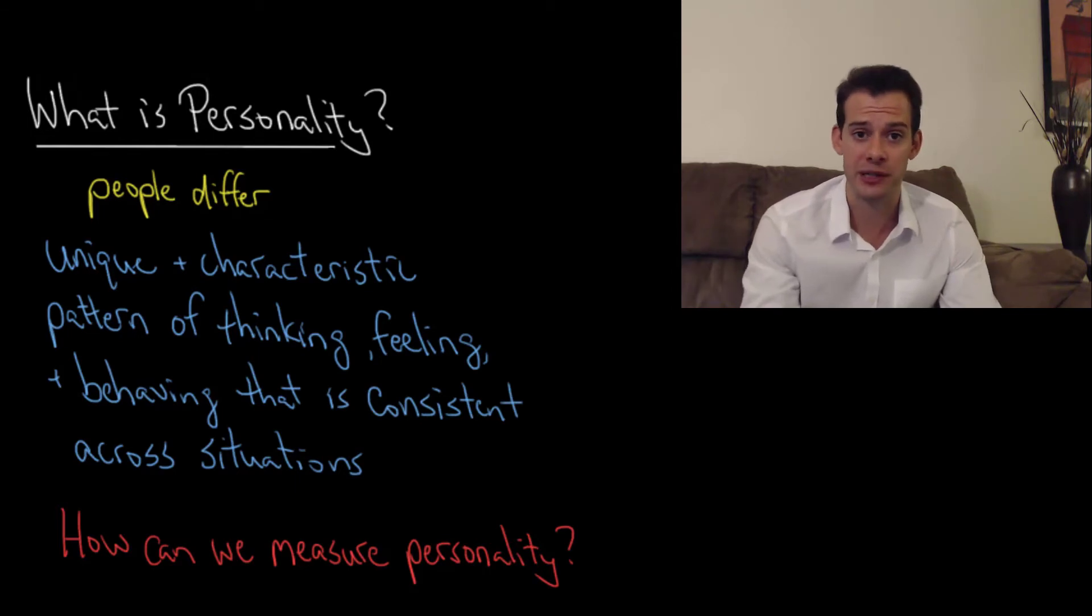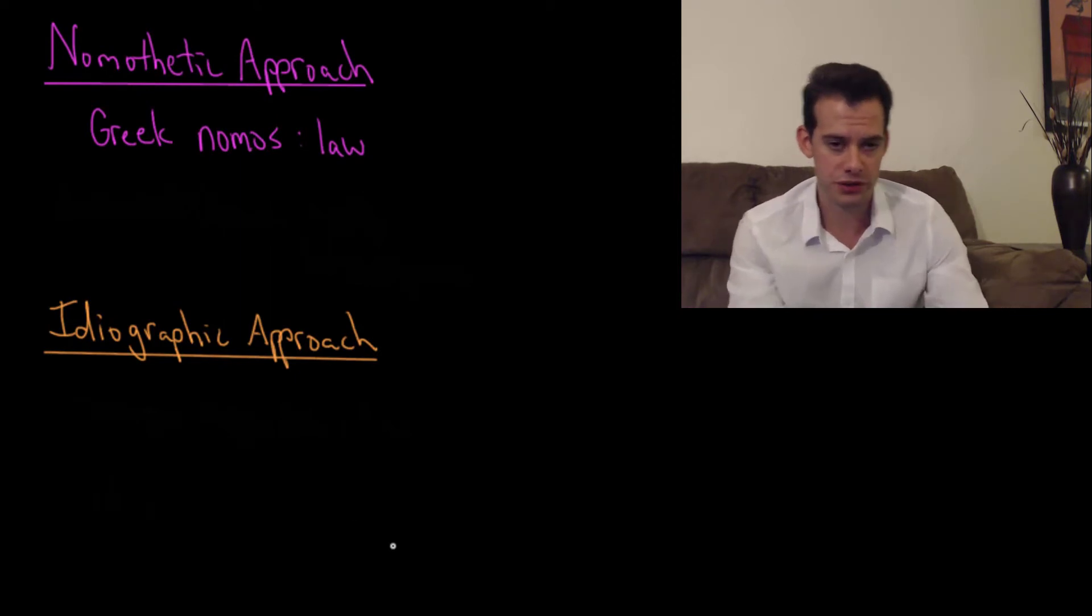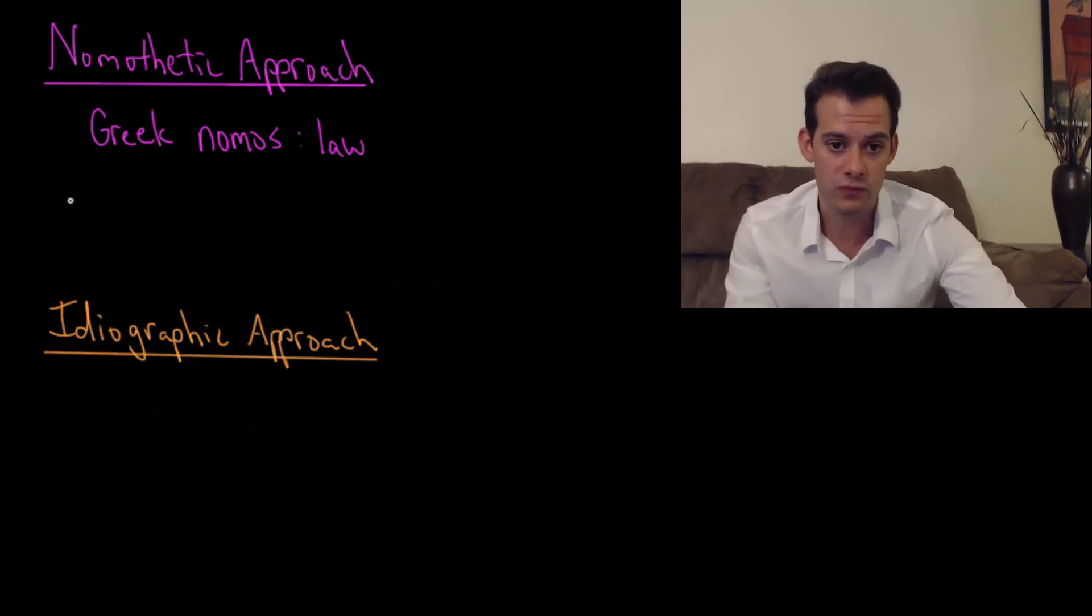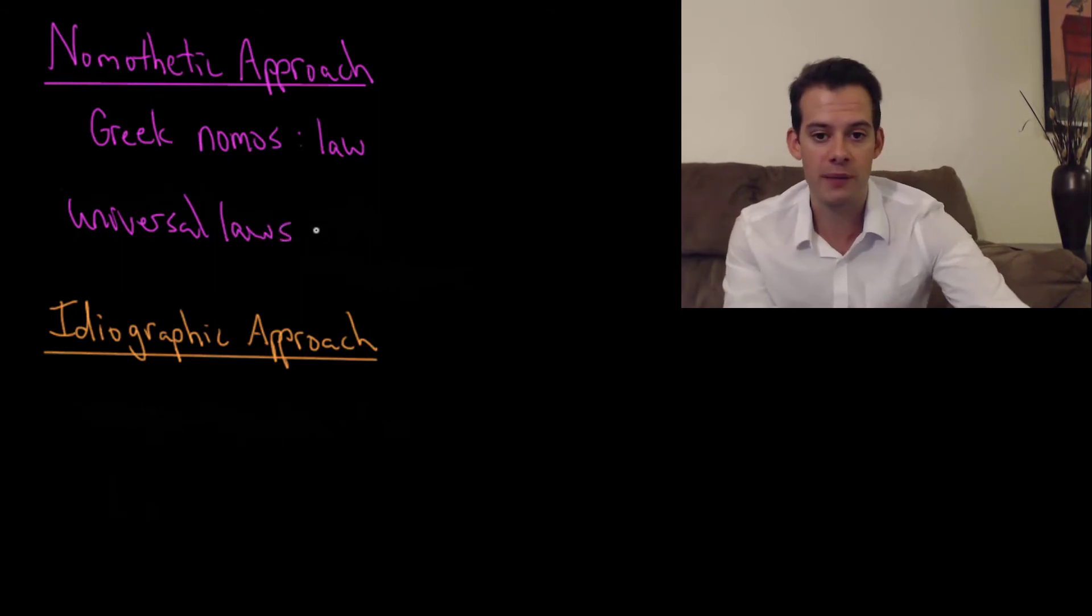So how can we go about measuring personality? How can we measure these patterns of thinking, feeling and behaving? Well there's two main approaches that we can adopt. The first of these is called a nomothetic approach. And so this comes from the Greek nomos or law. And what we're doing in a nomothetic approach to personality is we're trying to uncover the universal laws of personality. So what do I mean by that?